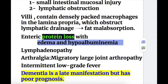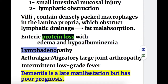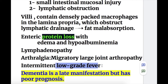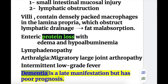Enteric protein loss causes hypoalbuminemia and edema. There is lymphadenopathy and arthralgia — specifically migratory large joint arthropathy. There is also intermittent low-grade fever.